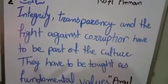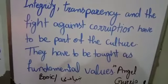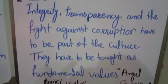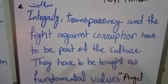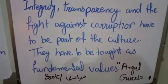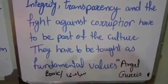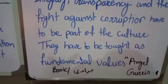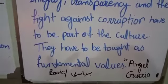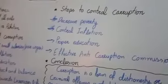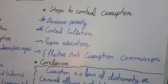ایک اور quotation یہ ہے: 'Integrity, transparency and the fight against corruption have to be part of the culture, they have to be taught as fundamental values.' یعنی integrity اور transparency کے بارے میں سکھانا چاہیے اور corruption کے خلاف لڑائی — یہ وہ چیزیں ہیں جو ہمارے culture کا حصہ ہونی چاہیے اور انہیں ہمیں اپنی بنیادی values کے طور پر آنے والی نسل کو سکھانا اور پڑھانا چاہیے۔ Students، یہ کچھ quotations ہیں اور یہ تھی ہماری outline — جس کو آپ detail سے discuss کر کے ایک بہت effective essay لکھ سکتے ہیں corruption کے اوپر۔ Thank you۔